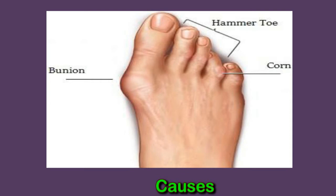These muscle weaknesses and imbalances are caused by a variety of factors. Because some of the causes are avoidable, it is possible to minimize the risk of developing hammer toe. Causes include certain shoes — wearing high heels or shoes that are too tight through the toe box can force toes into a flexed position.